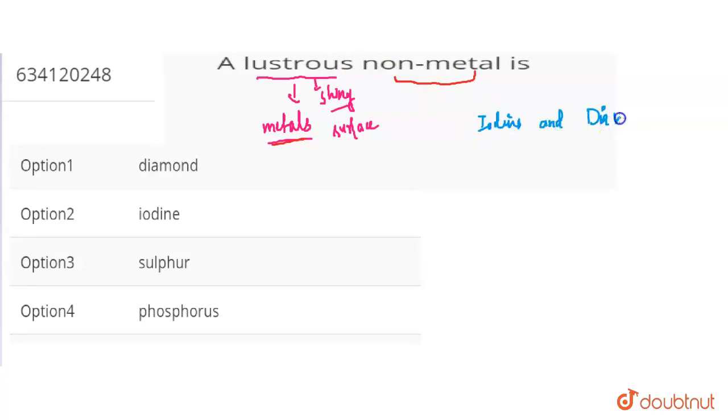What are these two elements? These elements are non-metals. They have a shiny surface, which means that they are lustrous.